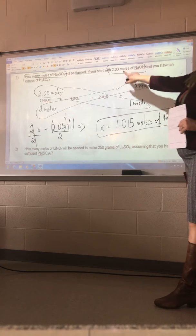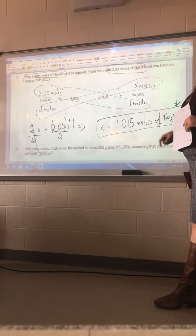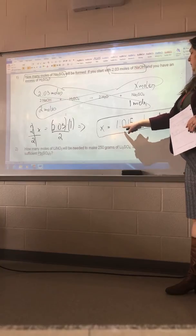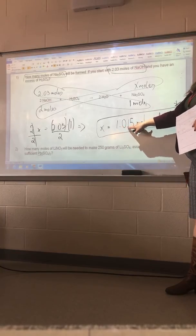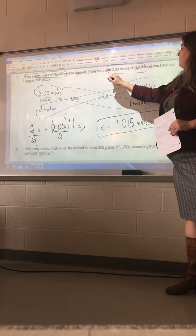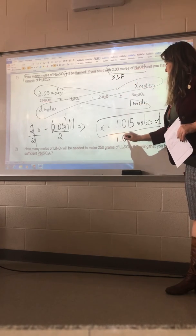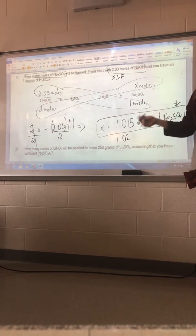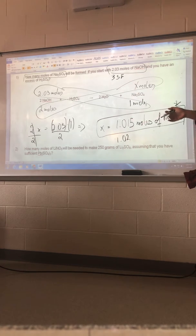I have 3 sig figs here, so the answer should be 3 sig figs. So actually it should be 1.02, right? To have it. Because this is 3 sig figs. So 1.02, right? But I'm doing, I'm not too worried about sig figs. Maybe I should be. I'm more worried about do you guys get the process? Are we good with this one?